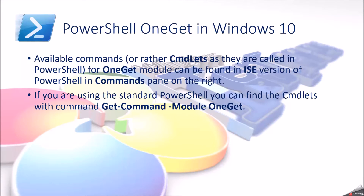Available commands — or rather commandlets, as they are called in PowerShell — for the OneGet module can be found in the ISE version of PowerShell in the Commands pane on the right. If you are using standard PowerShell, you can find the commandlets with the command Get-Command -Module OneGet.